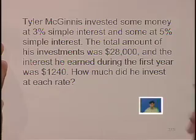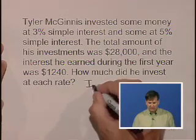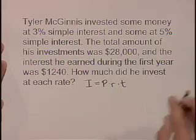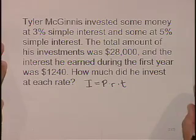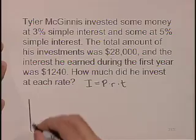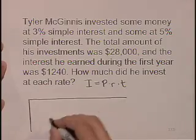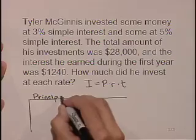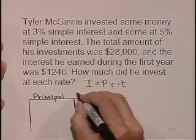The formula for simple interest that we want to use is I equals P times R times T. Interest equals principal times rate times time, but in this problem we have two different interest rates, 3% and 5%, and different amounts of money at each. So we're going to set up a table. We have principal, we have rate.